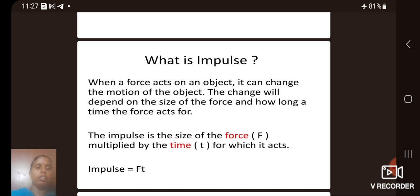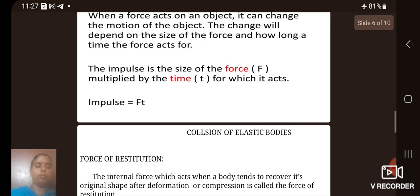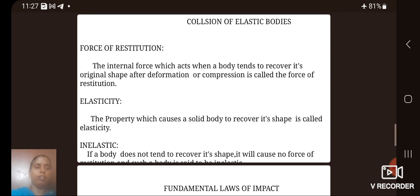Then next we define the impulse. When a force acts on an object, it can change the motion of the object. The change will depend on the size of the force and how long a time the force acts. The impulse is the size of force multiplied by the time for which it acts. Thus impulse equals force times time.